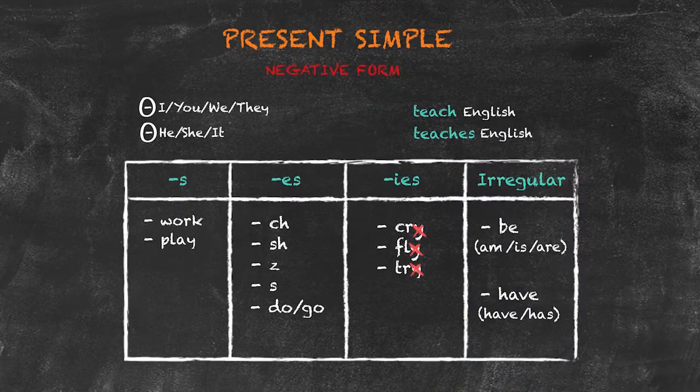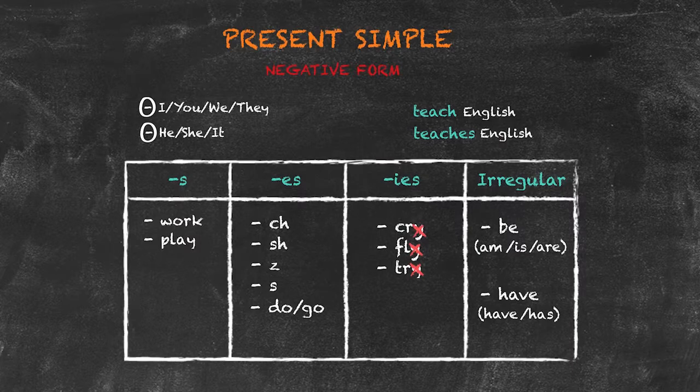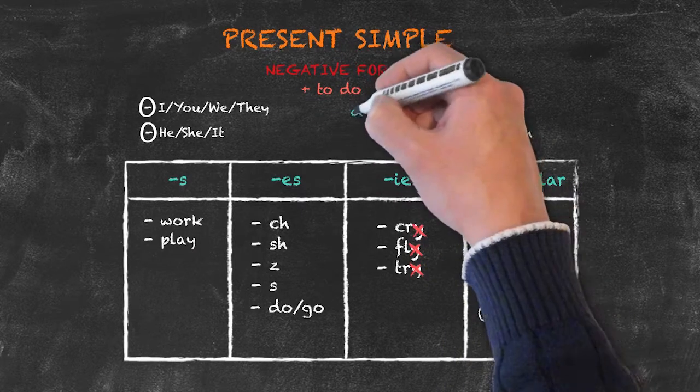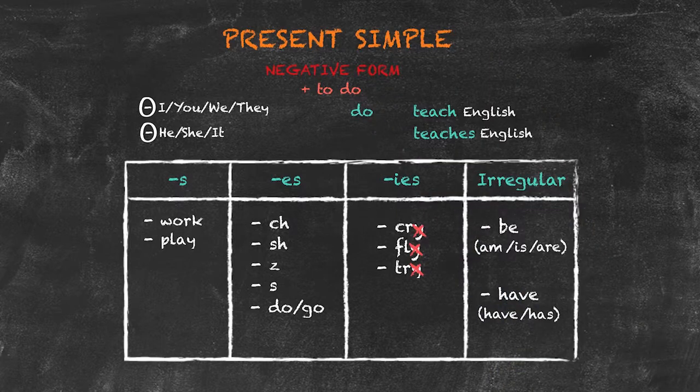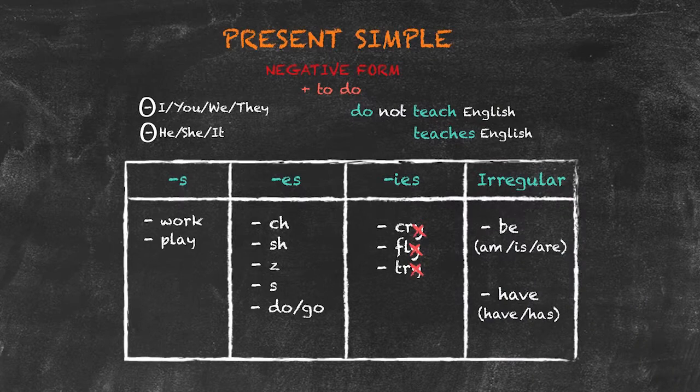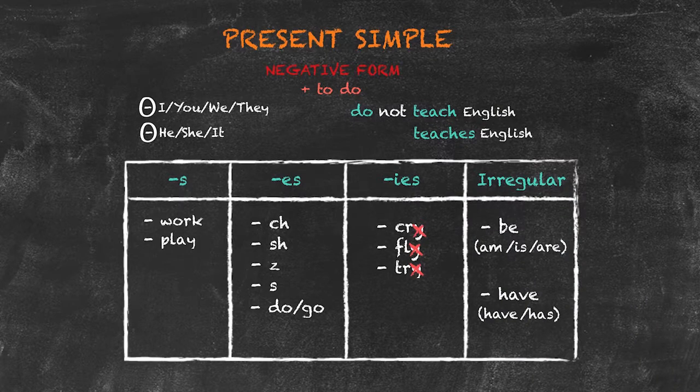For statements in the negative form, what we have to do is add the auxiliary verb to do. For subjects I, you, we, and they, we simply leave do as do, use the word not, and keep the base form of the verb now for the negative statements.